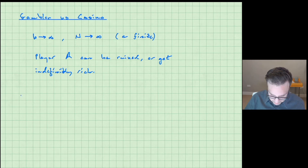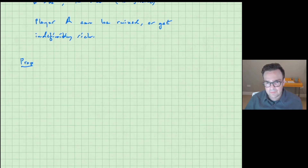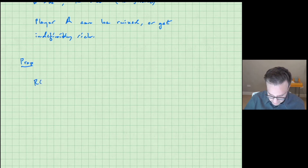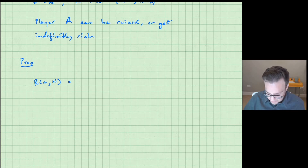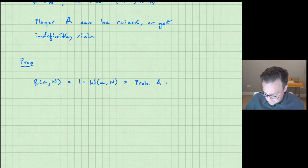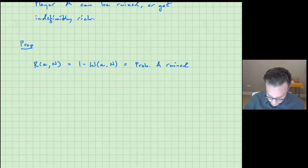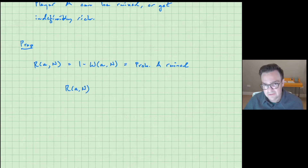It's a really simple calculation to see what happens here. We're going to work in the usual way with a proposition where I tell you the answer and then we do a proof. We're going to work in terms of the probability of A being ruined — the quantity we called capital R before. This is just the complement of the probability of A having victory, so it's 1 minus W from the last lecture.